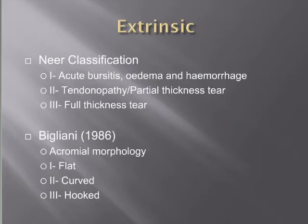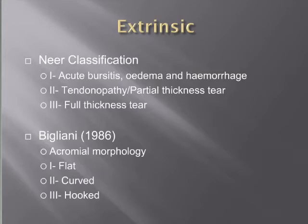Bigliani contributed to the extrinsic theory in 1986 when he classified acromion morphology. He drew a line along the undersurface of the acromion based on supraspinatus outlet view x-rays, devising flat versus curved versus hooked morphology, and found that with the Type 3 or hooked acromion there was a significantly increased incidence of impingement and rotator cuff pathology.